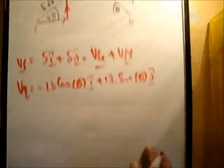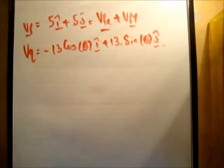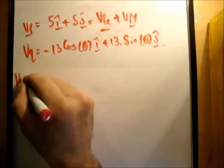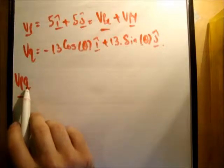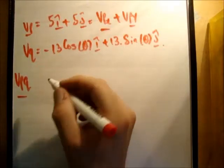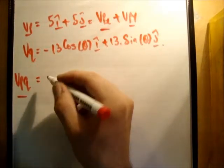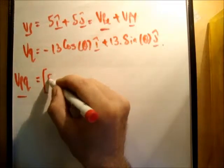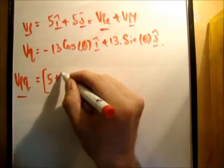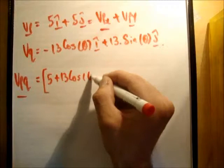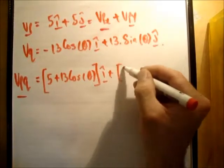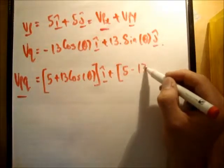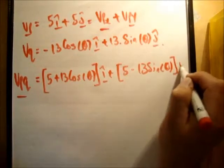So we need to get the vector VPQ. This is the velocity of P relative to Q. Or if you want to hold Q stationary, it's what P is doing. So you just do this nice and carefully, and you're going to get 5 plus 13 cos theta I plus 5 minus 13 sin of theta J.